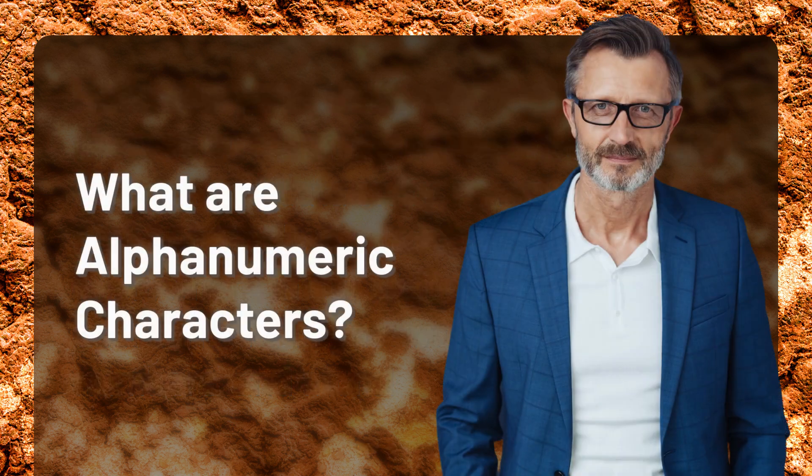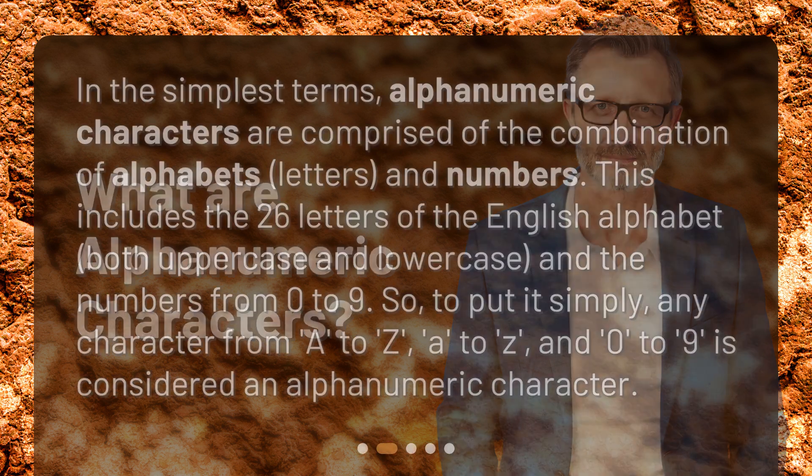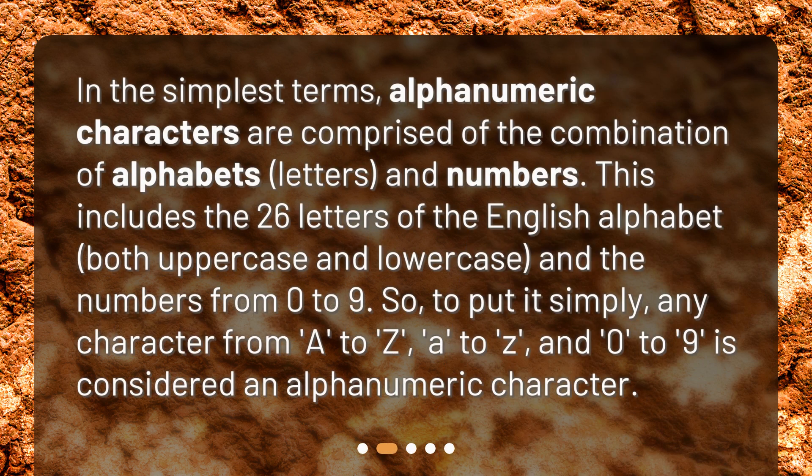What are alphanumeric characters? In the simplest terms, alphanumeric characters are comprised of the combination of alphabets, letters, and numbers. This includes the 26 letters of the English alphabet, both uppercase and lowercase, and the numbers from 0 to 9.